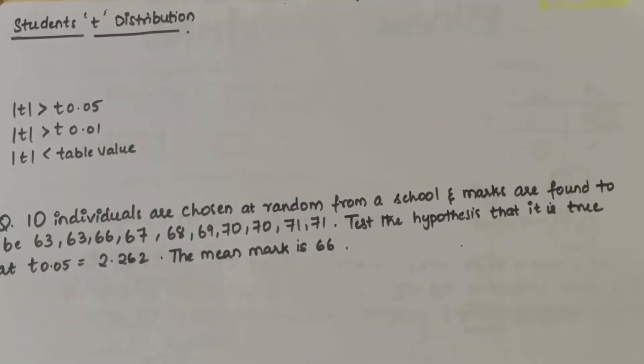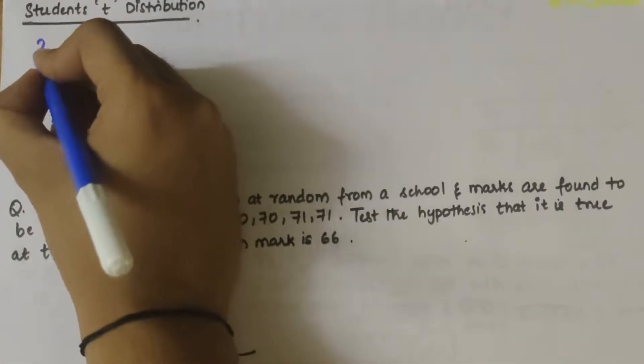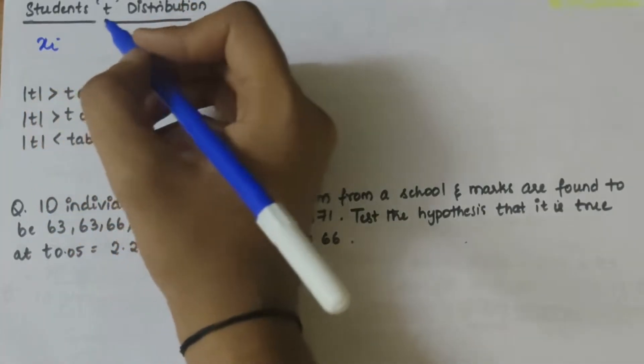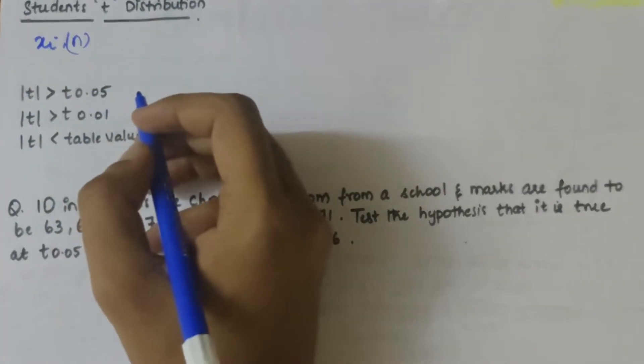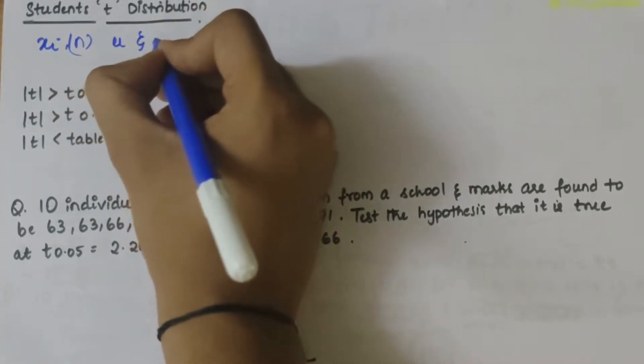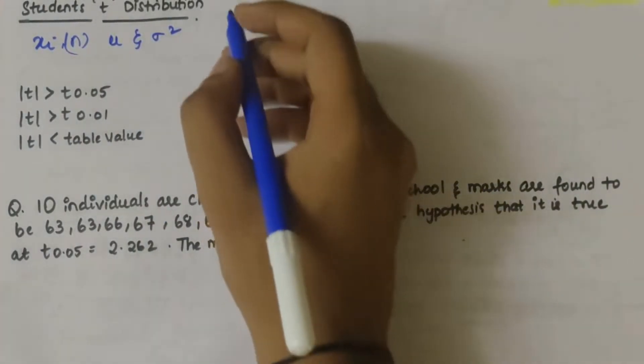In this video we'll be discussing the student t distribution and solving a numerical related to it. First let's take xi as a random sample of size n drawn from a normal population with mean mu and variance sigma squared.